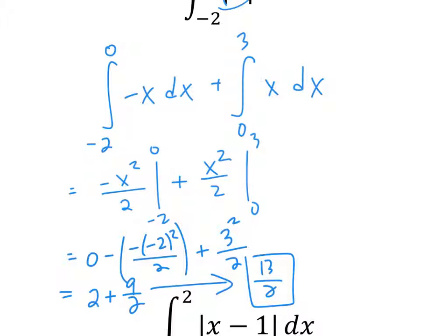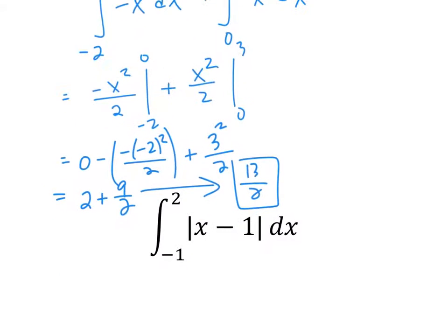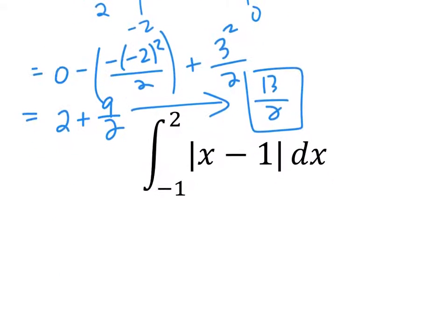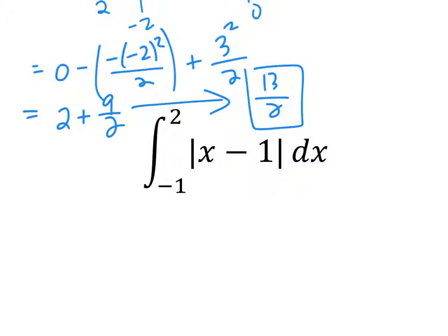Kind of the same — if you had just kept all your results positive, it would be the same thing. So let's have you try one on your own. You want to make sure that you figure out where this absolute value becomes zero.